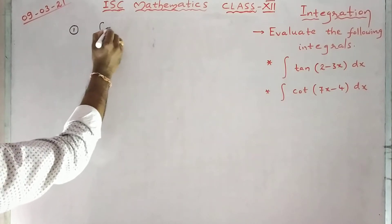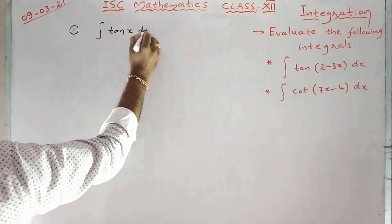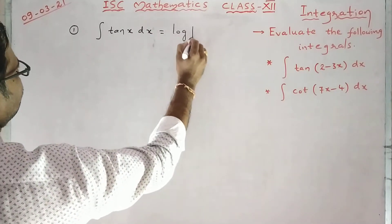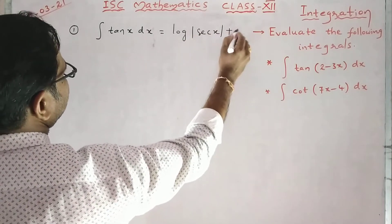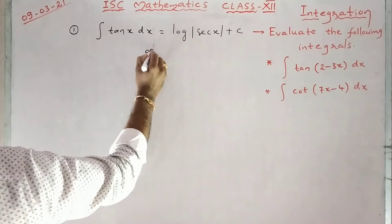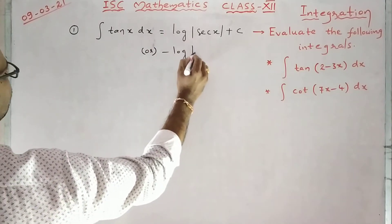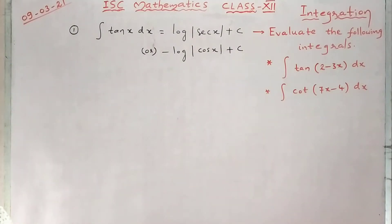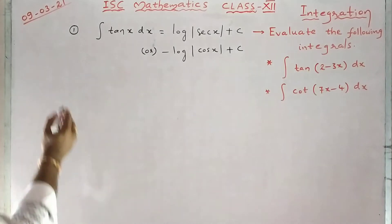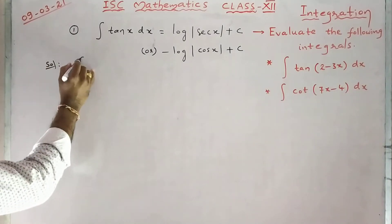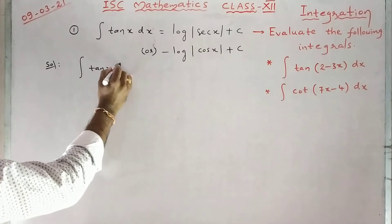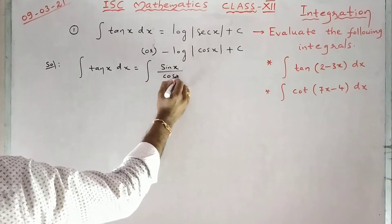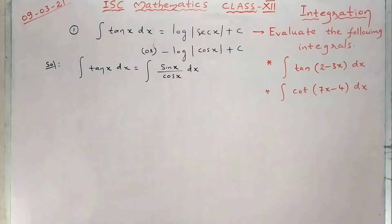One formula we are going to use: integral tan x dx equals log mod secant x plus c, or we can write minus log mod cos x plus c. First we will see this. Integral tan x dx equals integral — tan x means we can write sin x by cos x, dx.